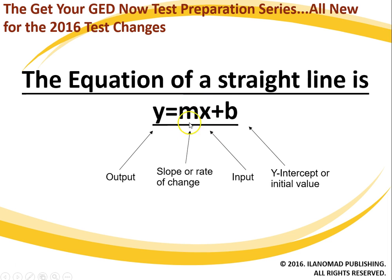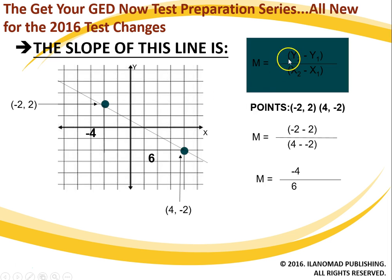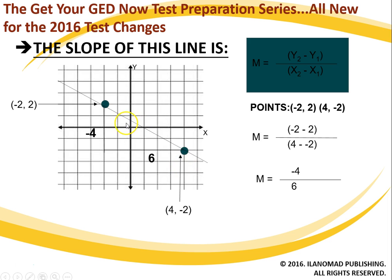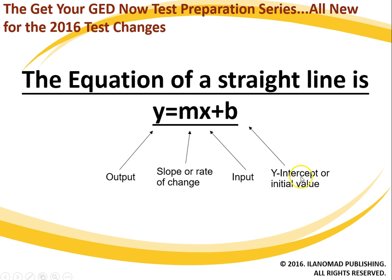That slope fits into a bigger concept called the equation of a straight line, or the slope-intercept form, which is y equals mx plus b. Again, this is very critical for success on the GED math test. What we've just done here, m, is the same m that's here. Then x is the input — the rate of change or slope of the line multiplied by the input, plus the y-intercept or the initial value. The y-intercept is the first place where it crosses the y-axis. For word problems, it is the initial value.